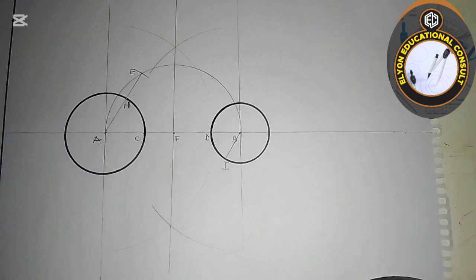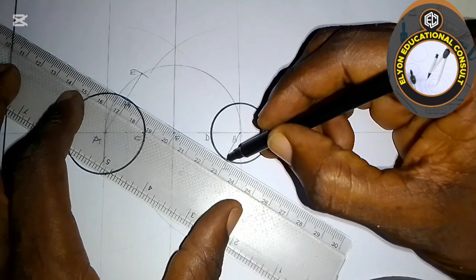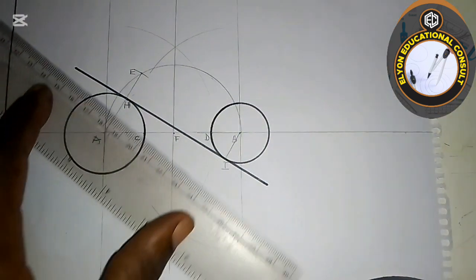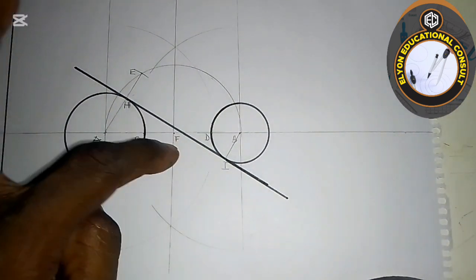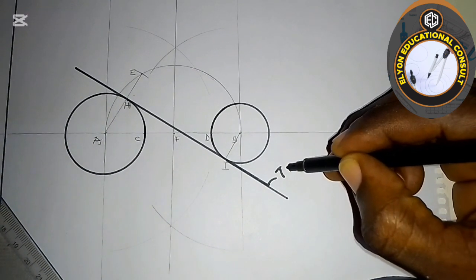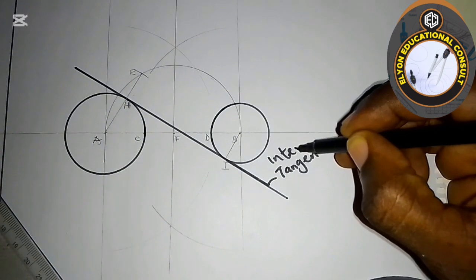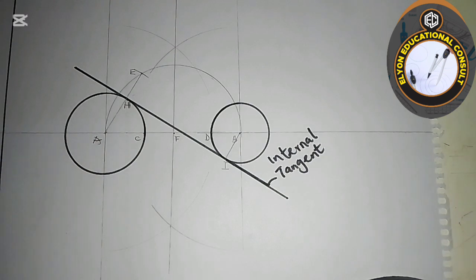I draw the line joining I to H, extending it slightly. This line is our internal tangent — it does not pass through the centers. That completes the internal tangent. Please subscribe and share this video with friends who study technical drawing. Thank you and God bless you.